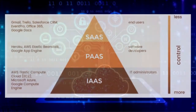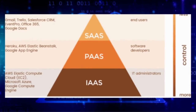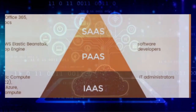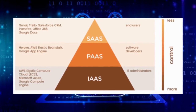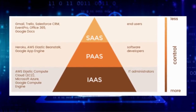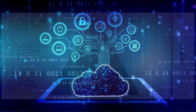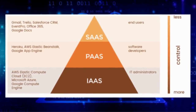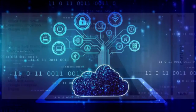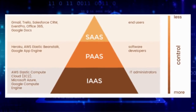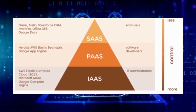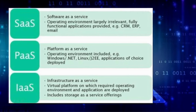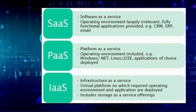The main differences between these three cloud service models are the level of control and responsibility they provide to businesses. With IaaS, businesses have the most control and responsibility over the underlying infrastructure, while with SaaS, they have the least control and responsibility. Each cloud service model has its own use cases and factors to consider when choosing between them.